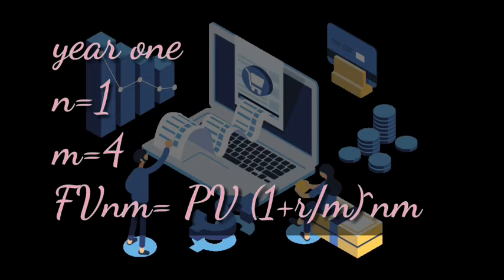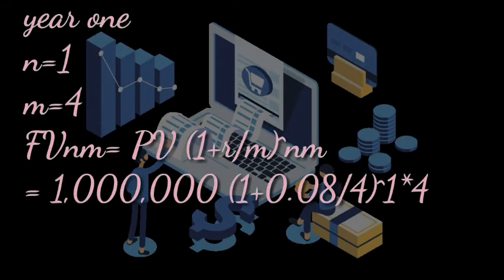In a year there are four quarters, so our m is four. In year one, our n is one. We shall use the multi-compounding formula: FV equals PV into brackets one plus r over m, power n times m. From our question, present value is one million, into brackets one plus 0.08 divided by four, power one times four.